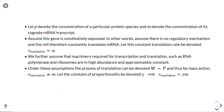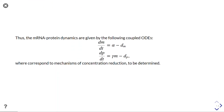By mass action kinetics, the translation rate is proportional to mRNA concentration, with constant of proportionality gamma. The total translation rate is gamma times m. The mRNA-protein dynamics are given by a coupled ODE system: dm/dt = alpha minus D_m (mRNA decay), and dp/dt = gamma·m minus D_p (protein decay). The constant transcription rate alpha drives mRNA production, while D_m and D_p represent decay terms to be determined.